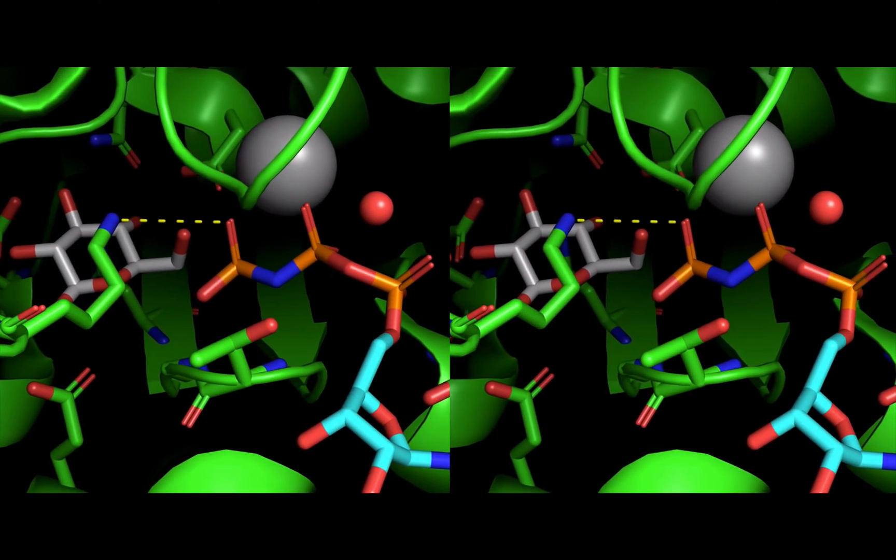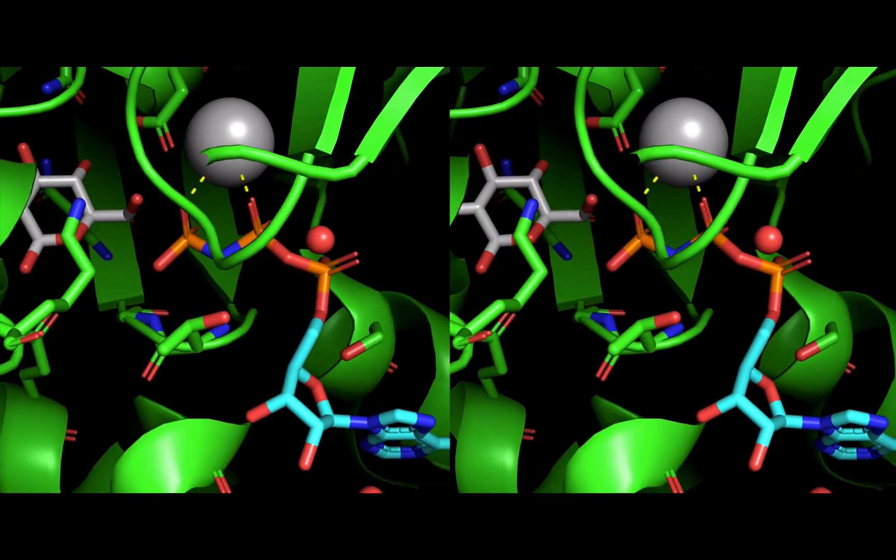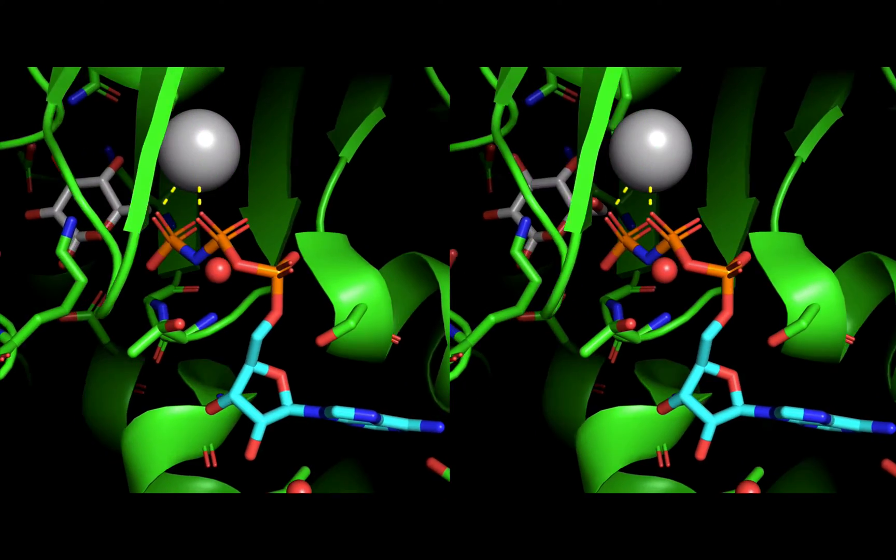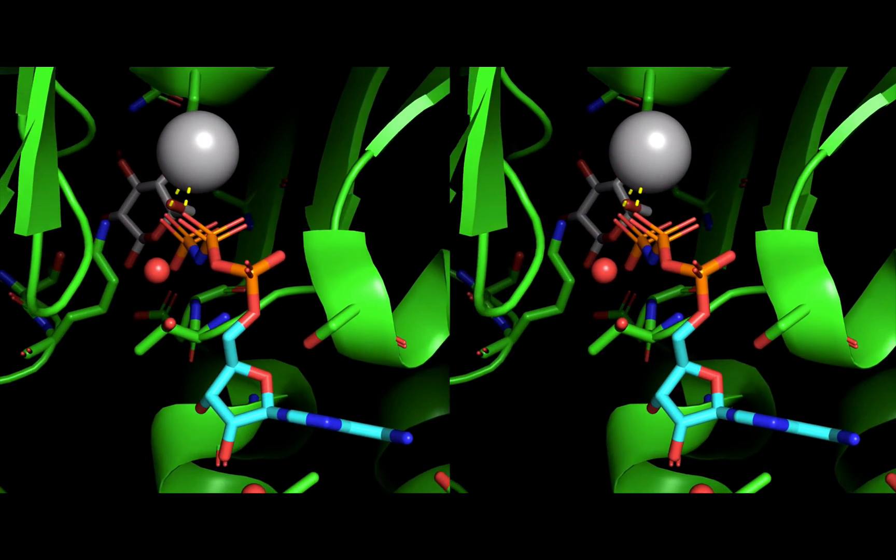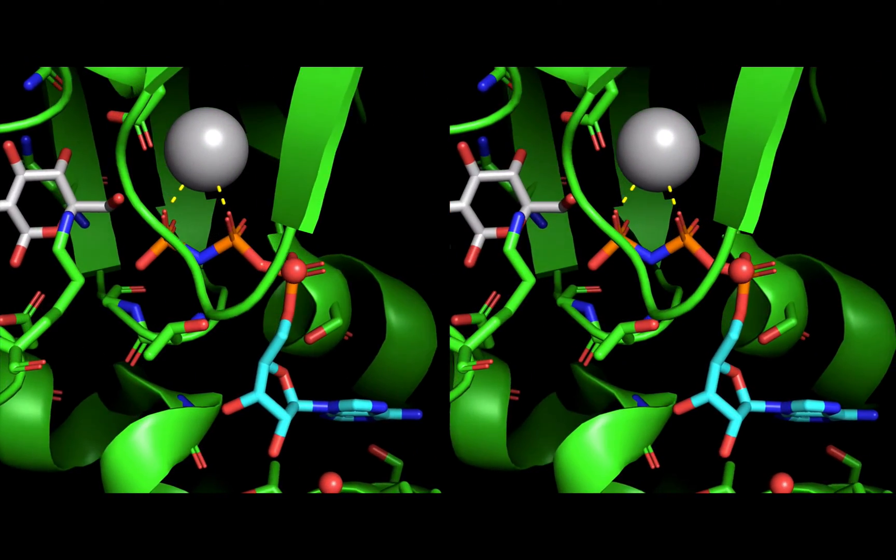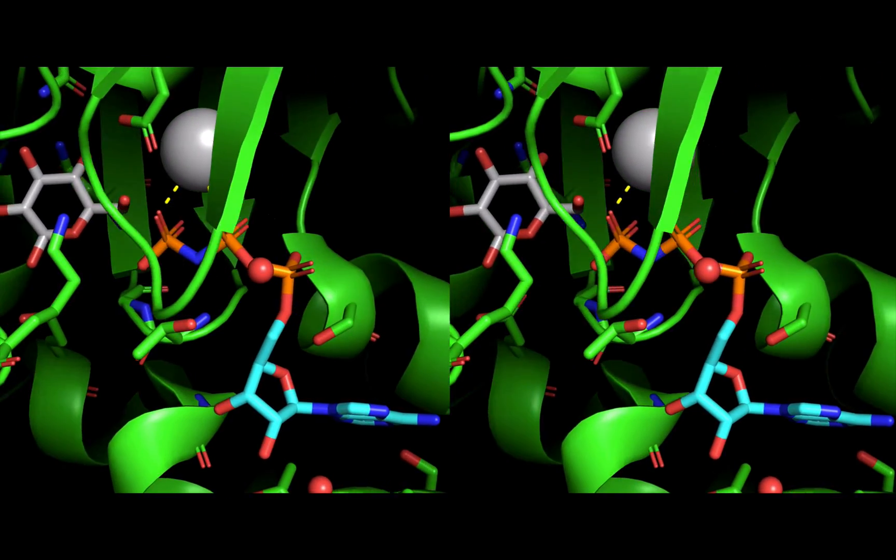But wait a second, there's also this gray sphere. That's a magnesium ion. Hexokinase requires that ATP bind with magnesium to perform the reaction. Magnesium is an enzyme helper, and that's why it's important to have in your diet.